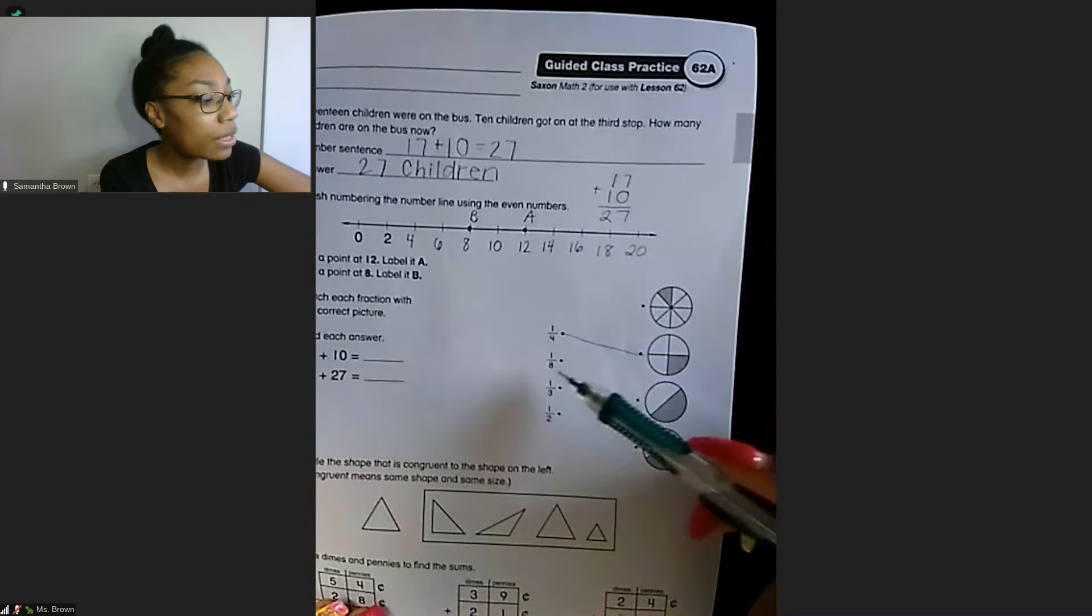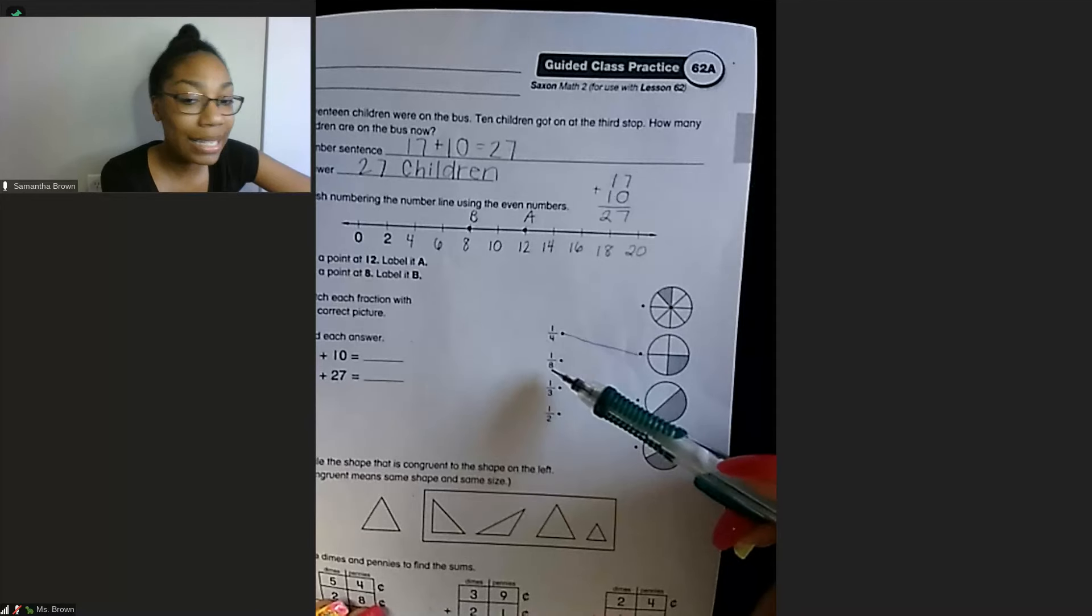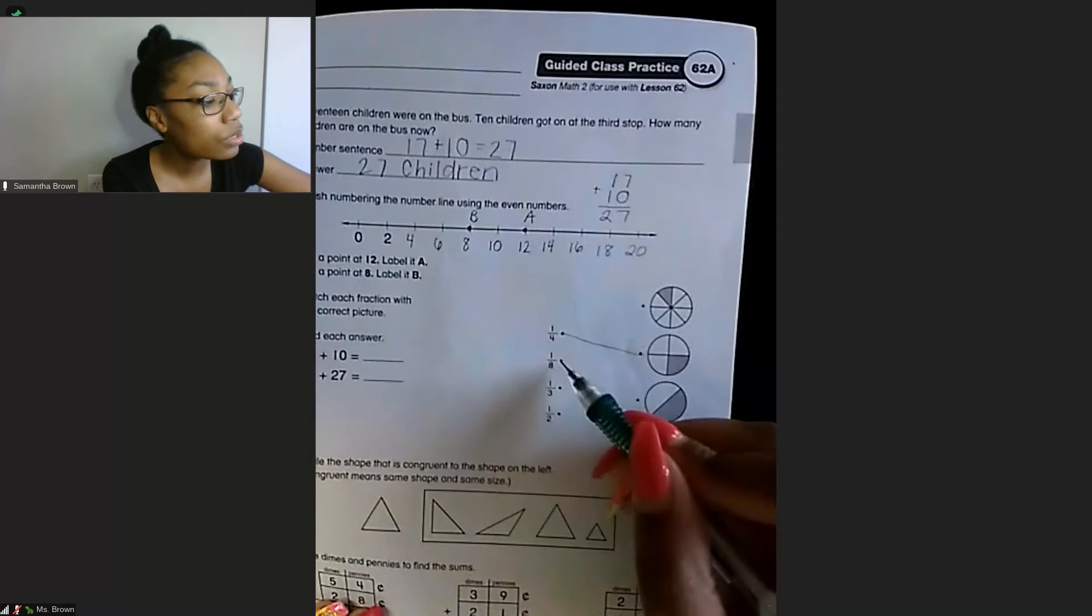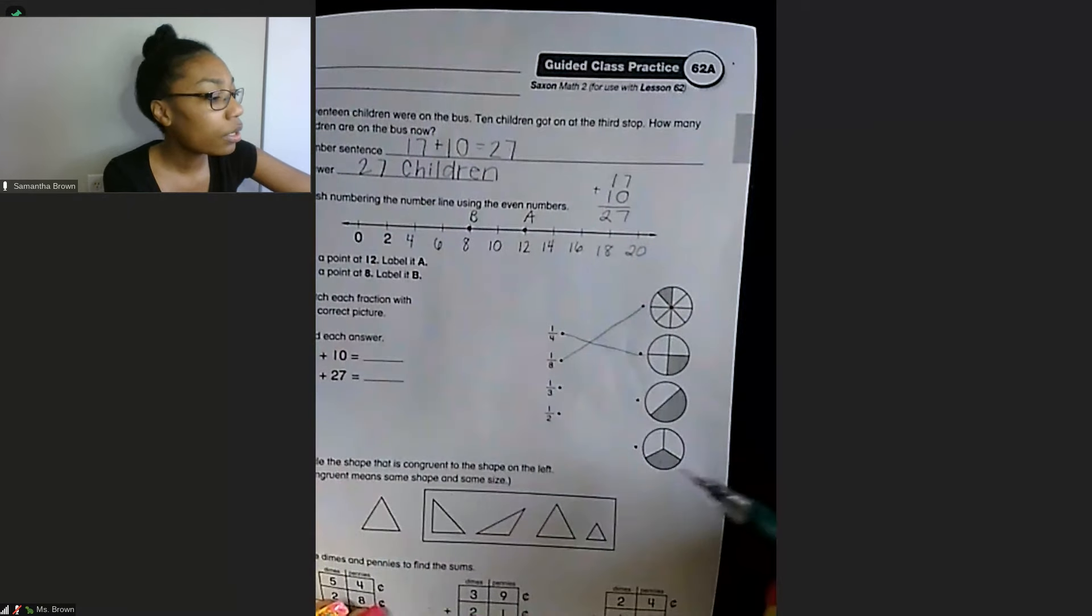1/8, we need to look for one part that is shaded out of 8 pieces. So we have, this is just 2 pieces, so that's not enough. But if I go up here, I have 1, 2, 3, 4, 5, 6, 7, 8 pieces and only one is shaded. So I need to draw my line there. 1/3, we have 3 pieces, one is shaded.